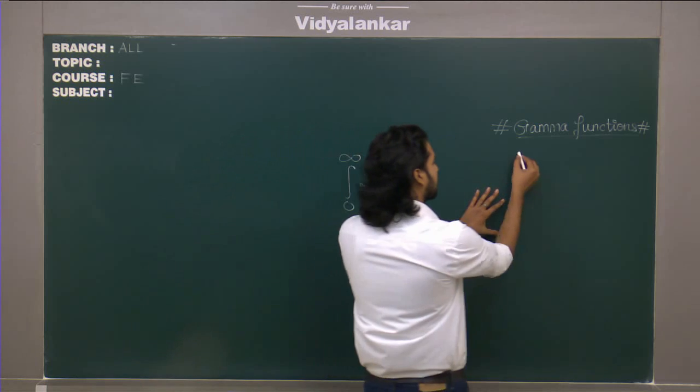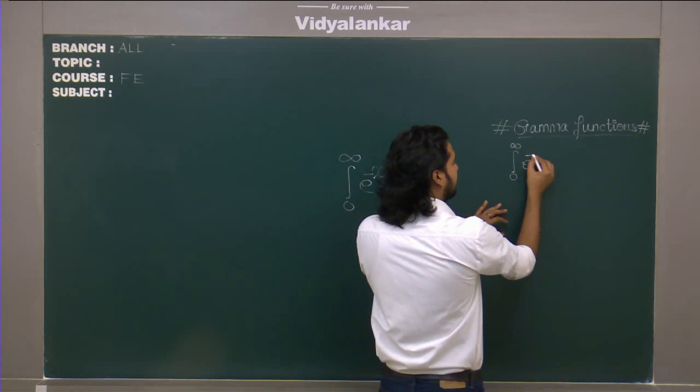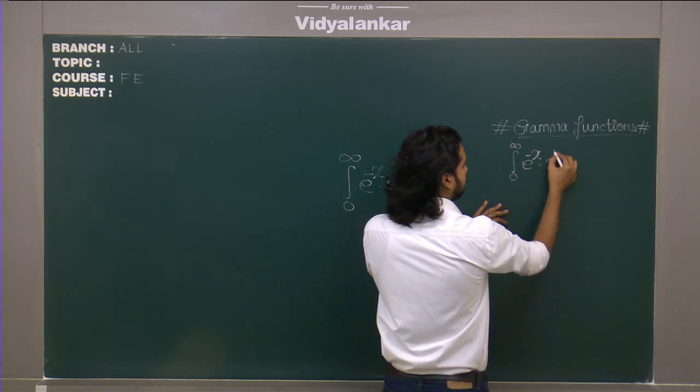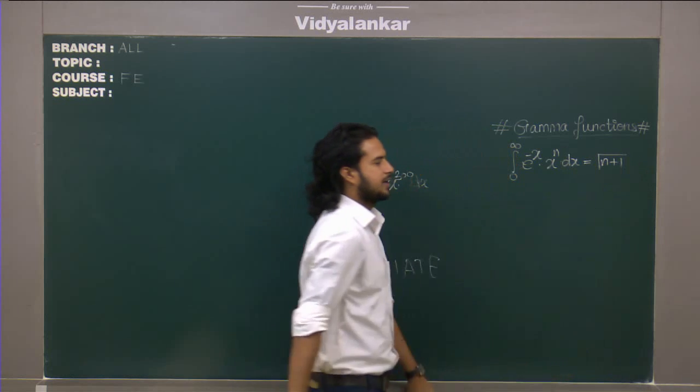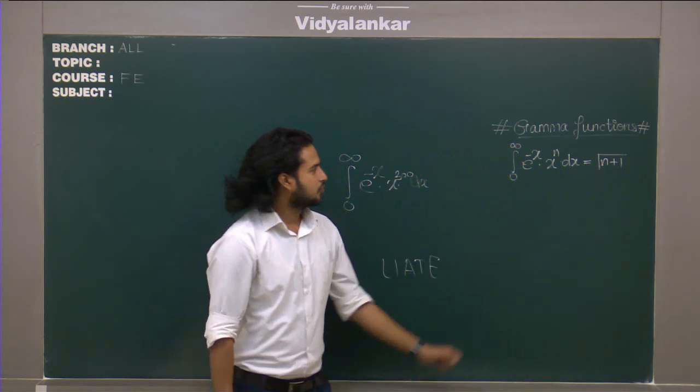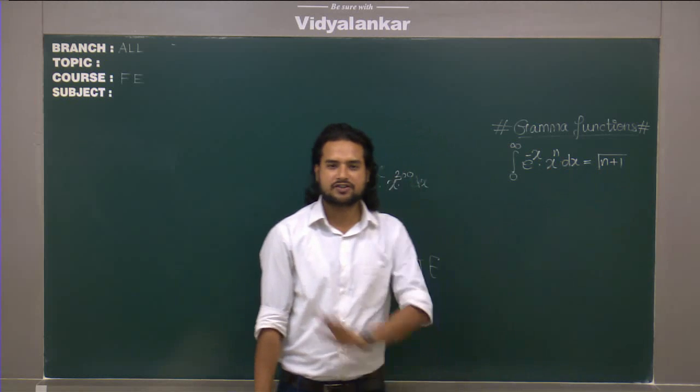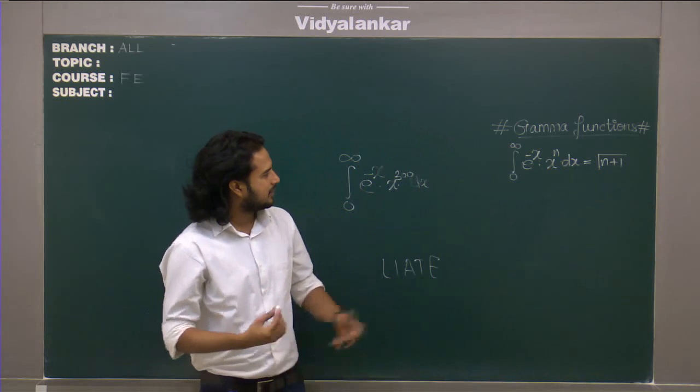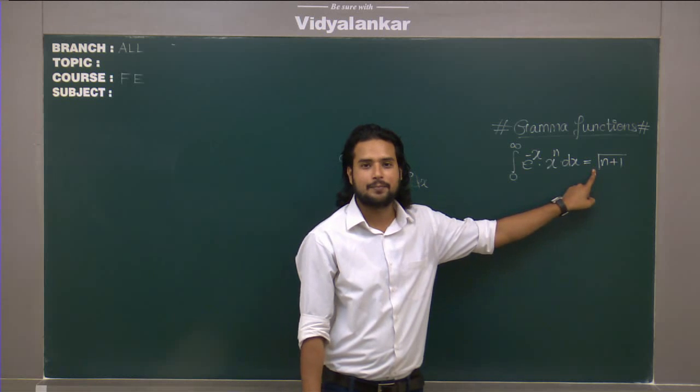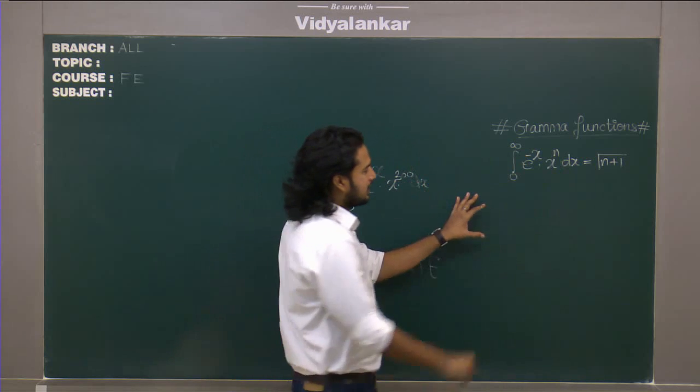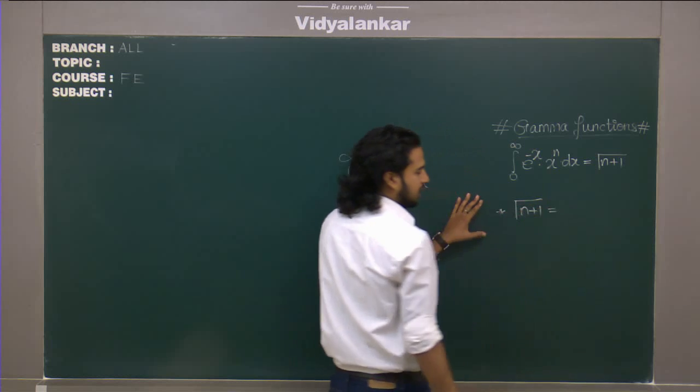Which says an integration 0 to infinity e raised to minus x, x raised to n dx is nothing but gamma n plus 1. So whatever power of x is, you simply have to put it over there and that will be your answer. You don't need to apply u into v rule. But there is a notation that I have used which we are not familiar with. Gamma. This is not square root, this is gamma.